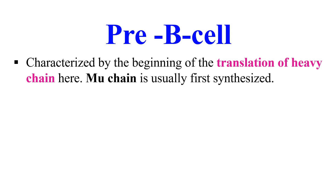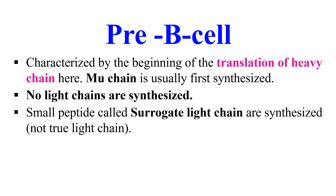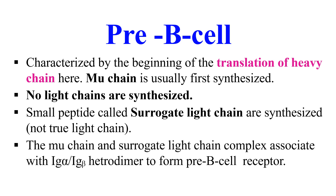The next stage is the pre B cell, or precursor B cell stage. Here, the translation of heavy chains begins — the mu chain is synthesized first. No light chain is synthesized during this stage; instead, small peptides called surrogate light chains are synthesized, but these are not true light chains. The mu chain and surrogate light chain complex associates with the Ig alpha and Ig beta heterodimer to form the pre B cell receptor.